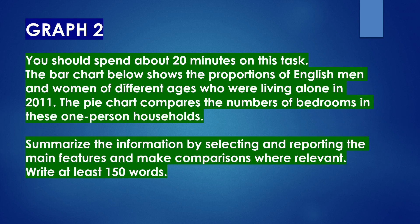Moving on to the second graph. You should spend about 20 minutes on this task. The bar chart below shows the proportions of English men and women of different ages who were living alone in 2011. The pie chart compares the numbers of bedrooms in these one-person households. Summarize the information by selecting and reporting the main features and make comparisons where relevant. Write at least 150 words.